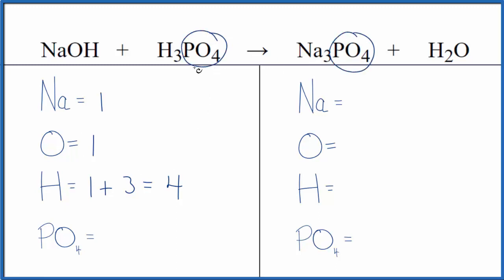This is a polyatomic ion. It stays together, so we're going to count it as one thing. That'll make it a lot easier to balance. We'll get the same answer either way, it's just faster. One phosphate ion.